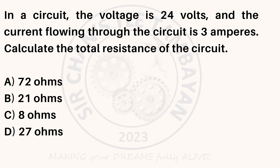In a circuit, the voltage is 24 volts, and the current flowing through the circuit is 3 amperes. Calculate the total resistance of the circuit. A. 72 ohms. B. 21 ohms. C. 8 ohms. D. 27 ohms.